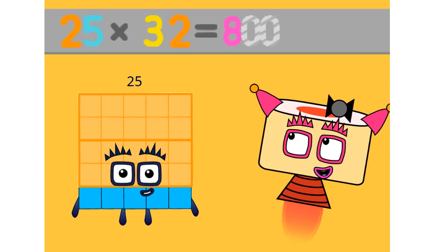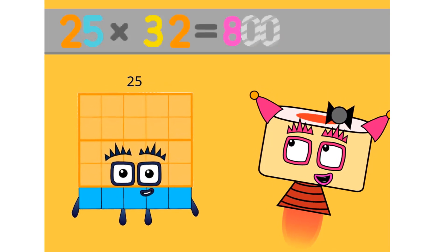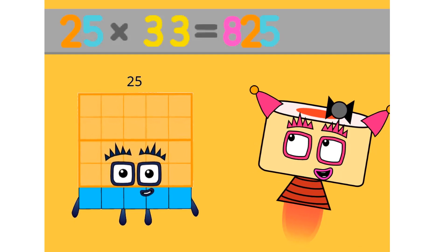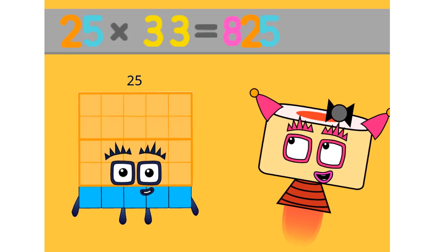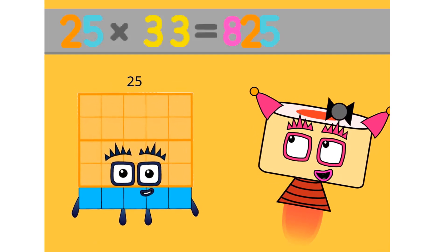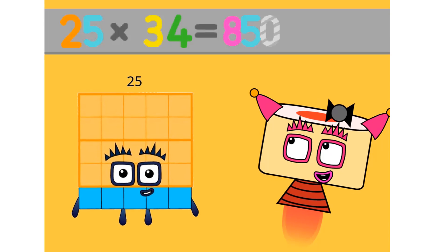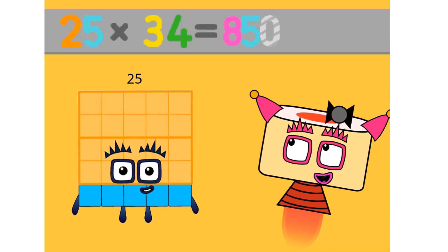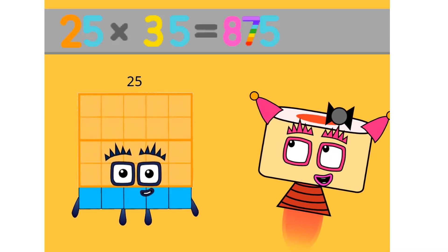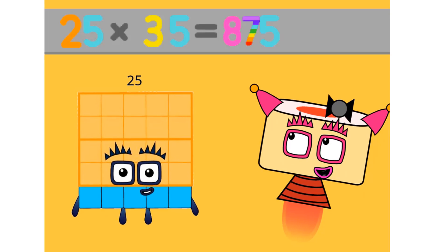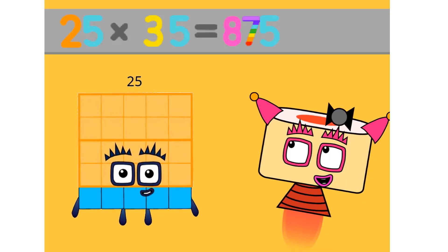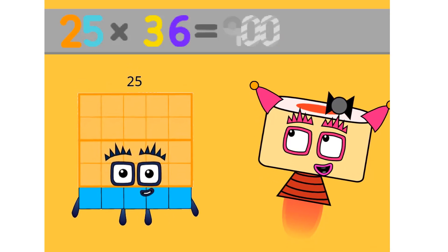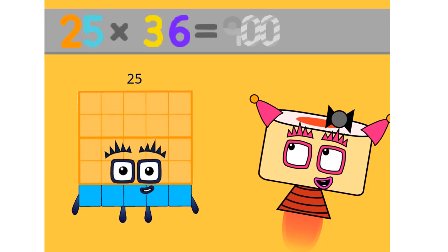25 times 32 equals 800. 25 times 33 equals 825. 25 times 34 equals 850. 25 times 35 equals 875. 25 times 36 equals 900.